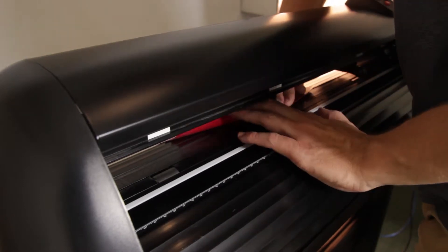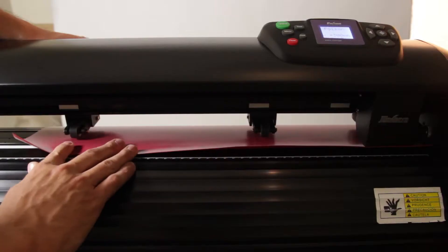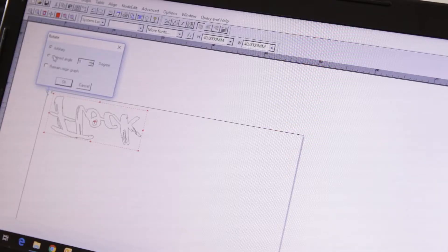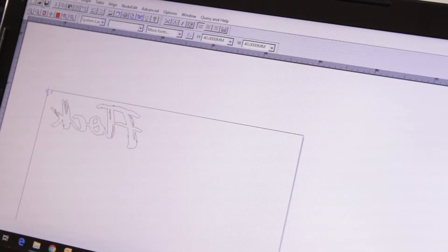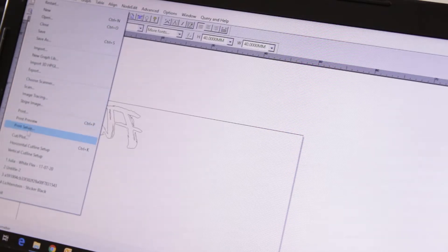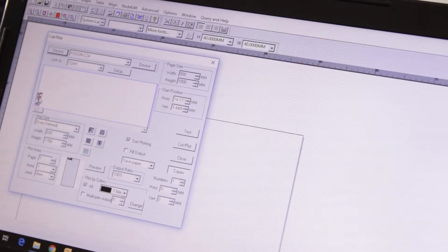Start by placing your vinyl into the vinyl cutter as follows. Next you want to get your design into your cutting program. Once you are happy with the size and placement of your design, you can go ahead and start cutting.